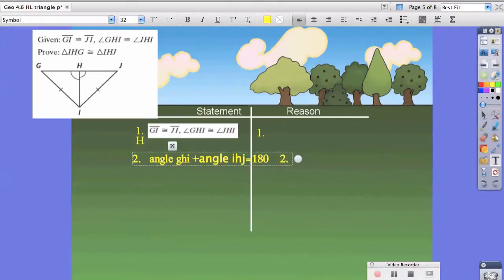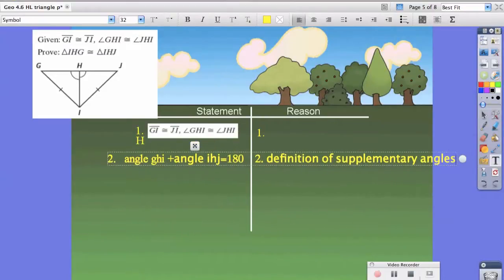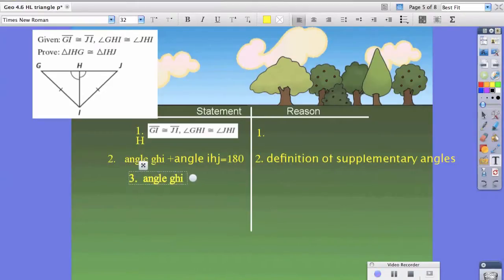We know this because of the definition of supplementary angles. Now, because we know that, we could say angle GHI plus angle GHI equals 180 degrees. Notice the only thing that changed from the step above was that we replaced angle IHJ with GHI. That is substitution.